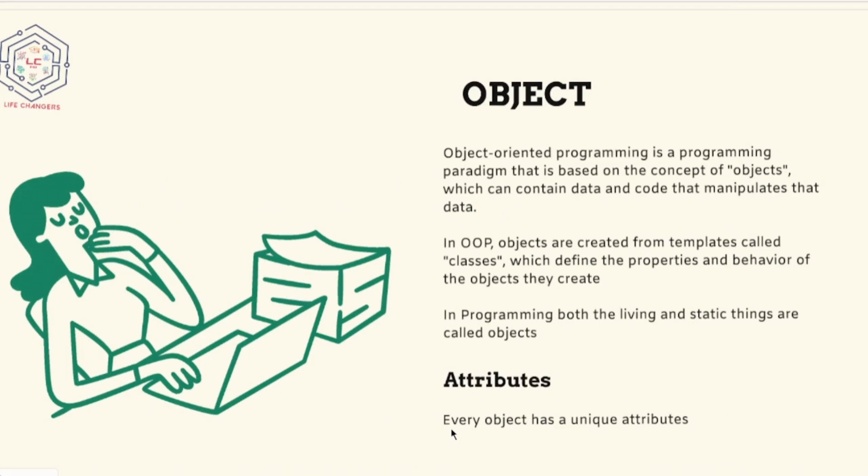In programming, both the living and static things are called objects. That's why your chair is an object, your book is an object, your mom, dad, your grandfather is also an object. So what is an object? Everything in this static and living world is called as the object.